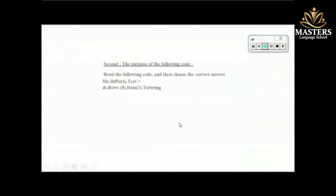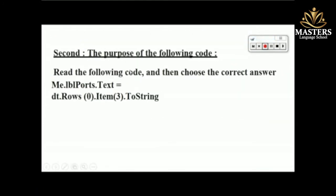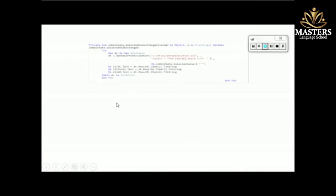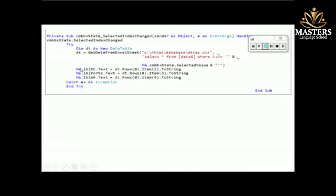The next question says: read the following code and choose the correct answer. The code shows 'lbl_ports.Text' — the label that displays the main ports — using row zero and item index 3, meaning we select the first row and the fourth column (since item 3 counts from zero). Then '.ToString' converts the value. The question asks what this code does.